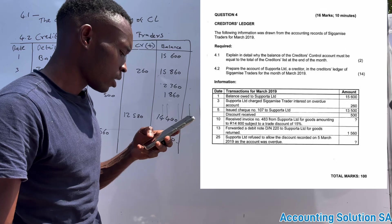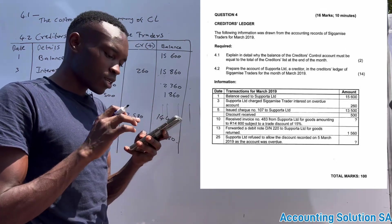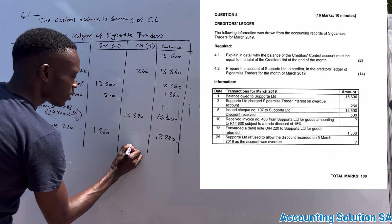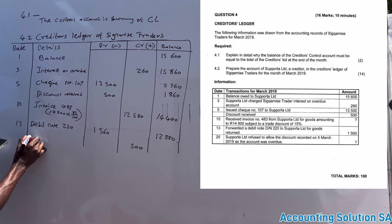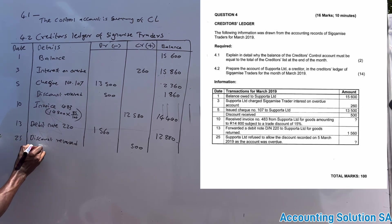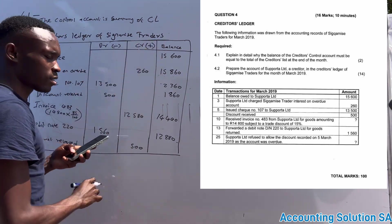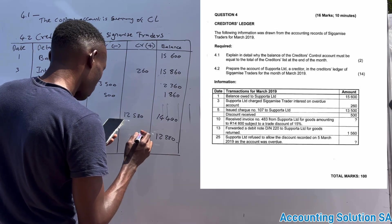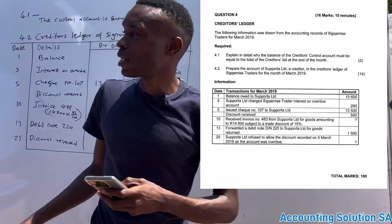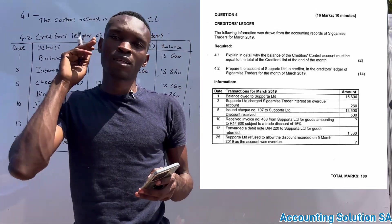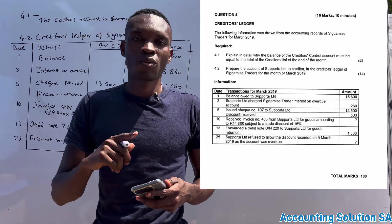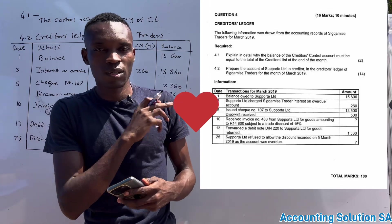On the 25th, Supporter Ltd refused to allow the discount recorded on the 5th of March 2019, as the account was overdue. The discount of 500 that we recorded must be reversed. Reversing the discount increases our liability, so we credit 500 on the 25th. This gives us a final balance of thirteen thousand three hundred and eighty. That's how you prepare your creditors ledger account. Please subscribe and like this video so we can keep recording more videos to help you with accounting.